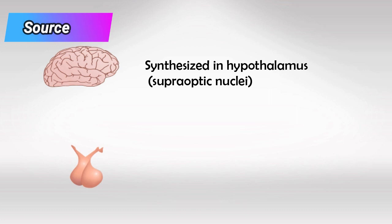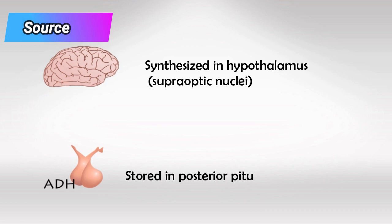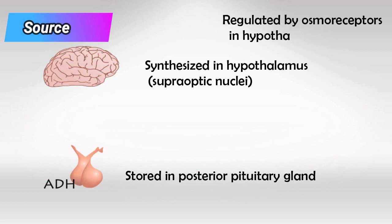ADH is secreted in the supraoptic nucleus of the hypothalamus and it travels down the infundibulum to be stored in the posterior pituitary. One very important note to remember is that the secretion of ADH is regulated by the osmoreceptors in the hypothalamus.